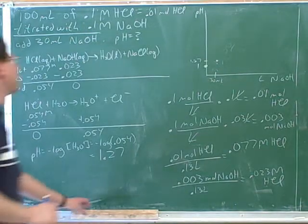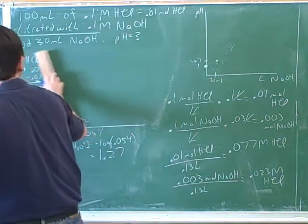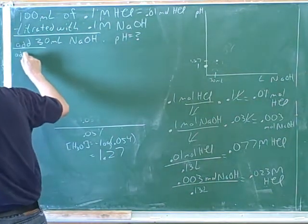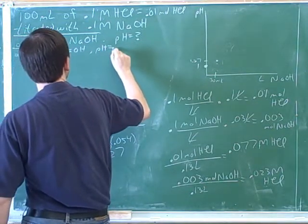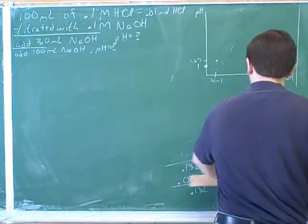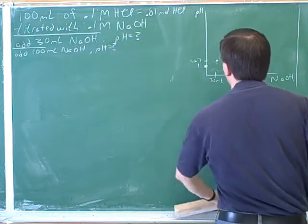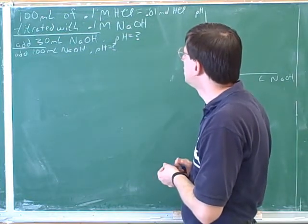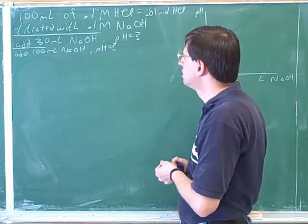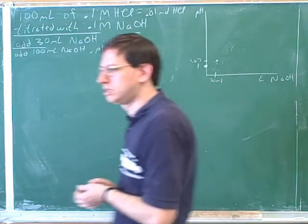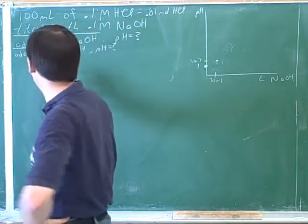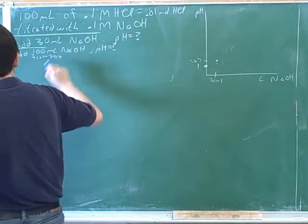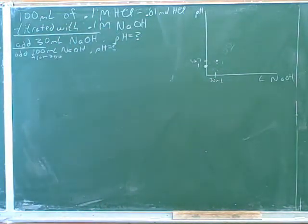Let's say we put in 100 milliliters of sodium hydroxide. Let's say we had 100 milliliters from zero — so we're not adding 100 plus 30. 100 milliliters from zero. So let's say we're starting over again. So it's 100 milliliters total, not 130 total.